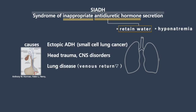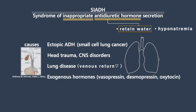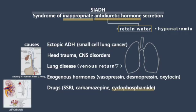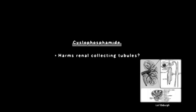When there is higher pressure in the chest from lung disease, less blood flows back to the heart, leading the body to produce more ADH. SIADH can also be induced by exogenous hormone administration. Medications such as cyclophosphamide can also be a cause of SIADH. Recent studies suggest that cyclophosphamide or its metabolites can harm renal collecting tubules or act like ADH.